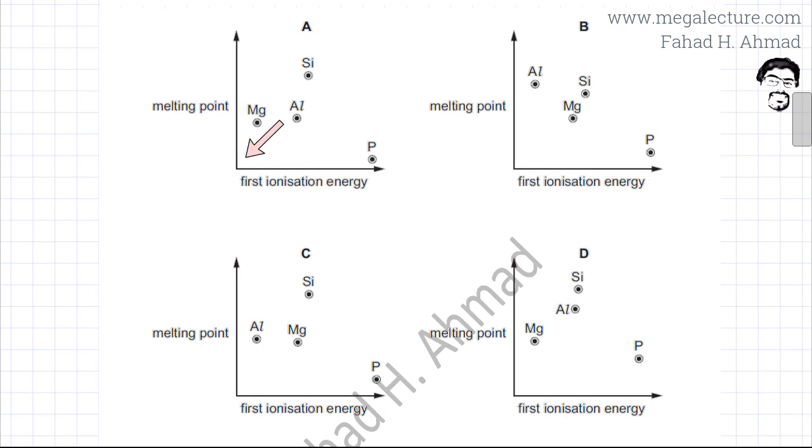Now focus on the horizontal axis. Aluminum would have the lowest ionization energy, so that element should be closer to the bottom of this axis. Over here, this option would be incorrect because aluminum is coming in at second position.